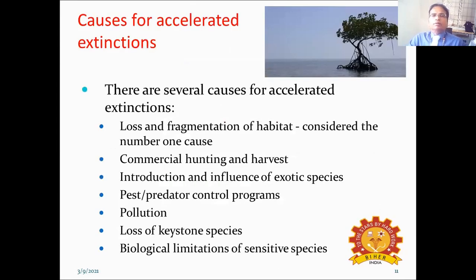What are the causes for accelerated extinction? There are several causes, including the following. Mainly, the loss and fragmentation of habitats is considered to be the number one cause, because once the habitat is lost, there is no possibility for the survival of the animals or the species.